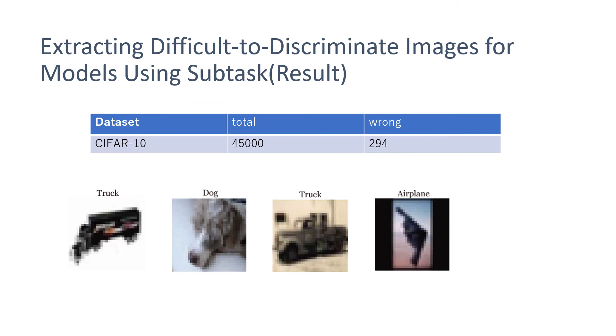We introduce some example difficult images, including truck, dock, and airplane. We can understand that these images are difficult to classify even at the human level. We introduce the generated non-decision images by CGAN. CGAN produced these images, but I think the quality is not yet good enough. We need to improve this section.